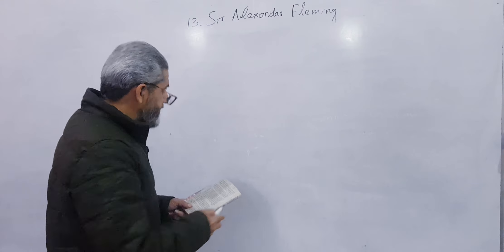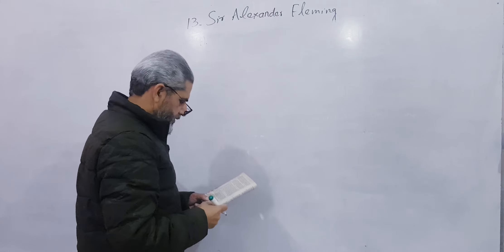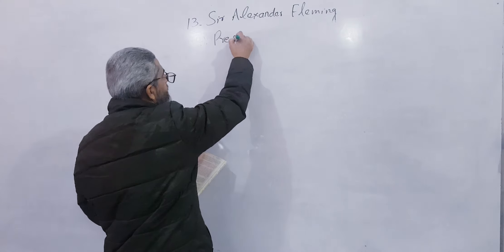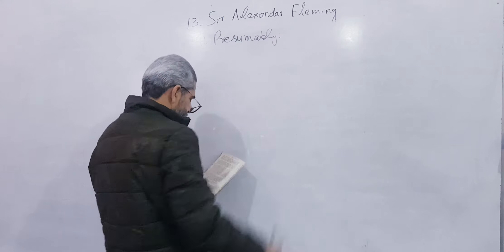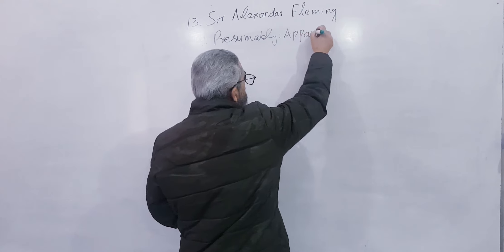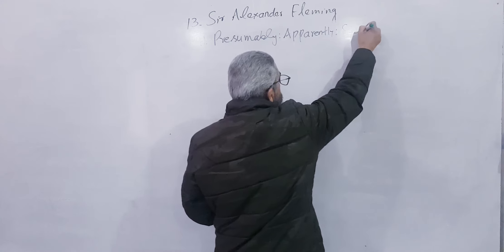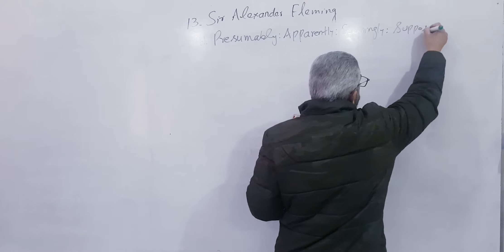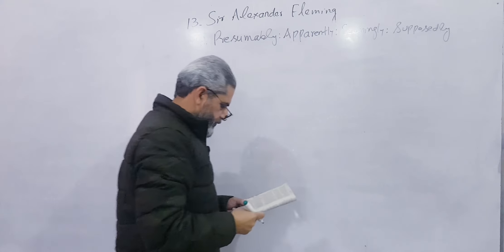Next, I will write number forty-one: Presumably. It means apparently, seemingly, supposedly, or presumably.